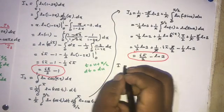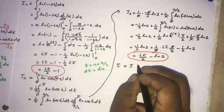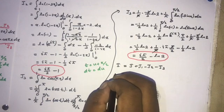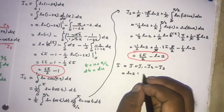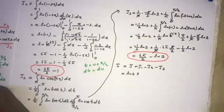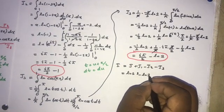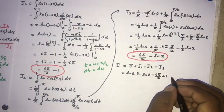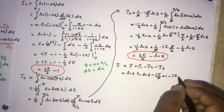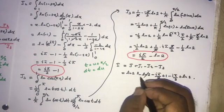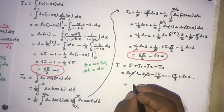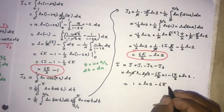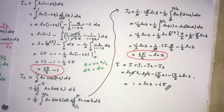Now combining everything: I = J + J1 - J2 - J3. Substituting: J = ln(2), J1 = minus ln(2), minus J2 = minus i*pi/2 + 1, minus J3 = minus i*pi/2 + ln(2). The ln(2) terms cancel, and combining the remaining terms gives I = 1 + ln(2) - i*pi. This is the final answer. If you like this video, please subscribe to this channel. Thank you for watching.